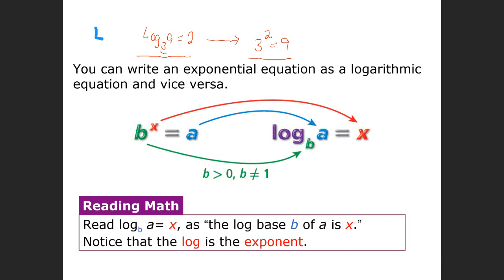So this right here is exactly the same thing as this right here. The log base 3 of 9 is equal to 2 is the exact same thing as 3 squared is equal to 9. A lot of the concept for this week is being able to rewrite a logarithm as an exponent and an exponent as a logarithm. I can go both directions.